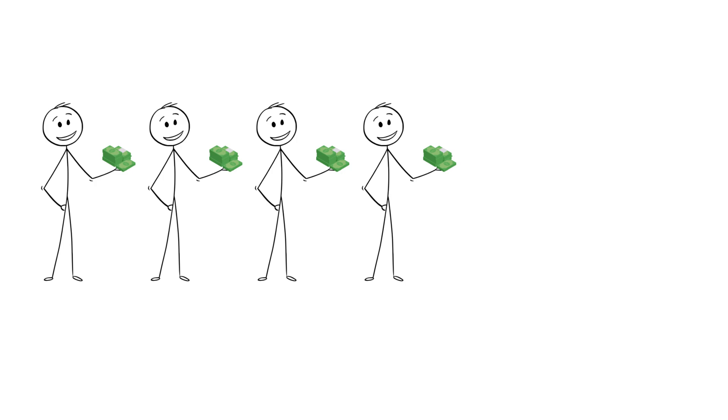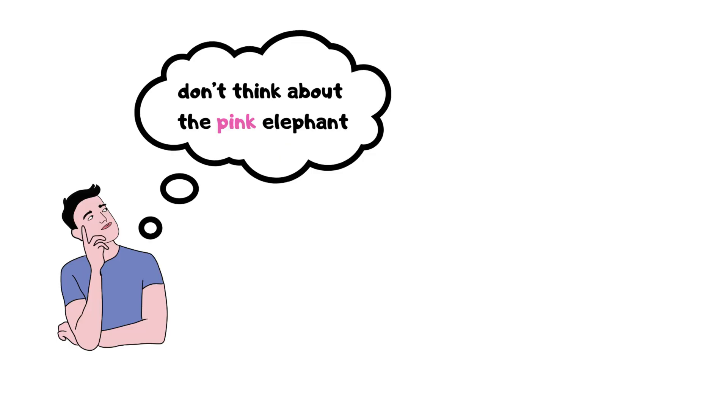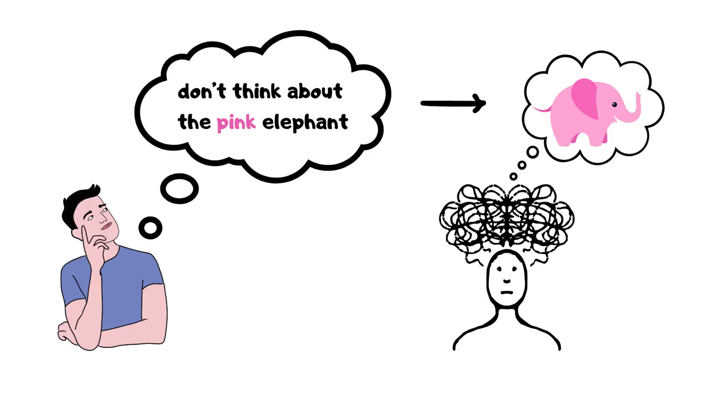Paradox of thrift. If everyone saves, savings decrease in aggregate because spending falls. Ironic process theory. Trying not to think about something can cause you to think about it more.